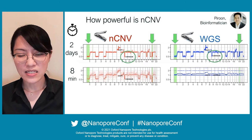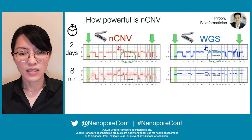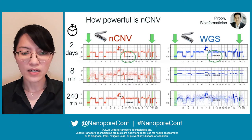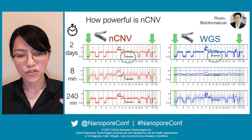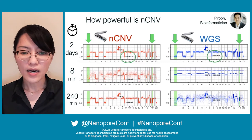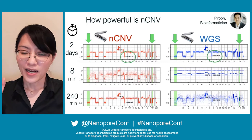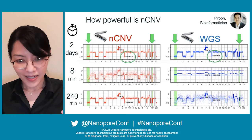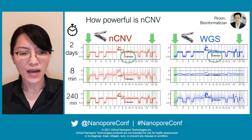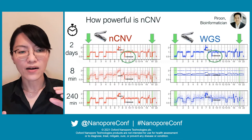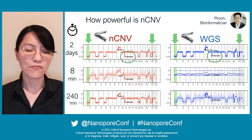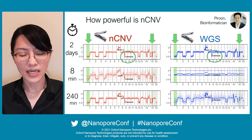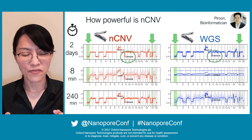Even 1p and 19q deletion signals are not clear at eight minutes for genomic DNA. After six hours the profile is sharper, but we found that six hours of genomic DNA sequencing gives about the same result as just eight minutes with the NCNV method. So this not only saves time but saves money on the flow cell.